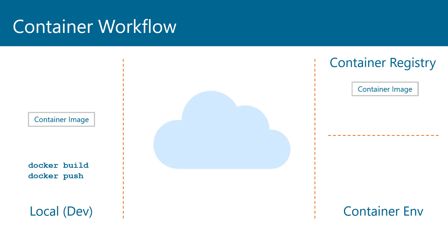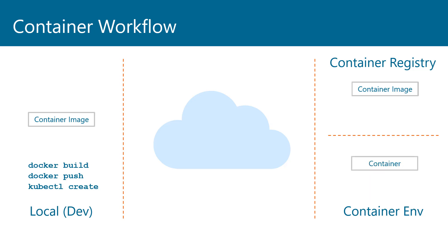Once the image is up on the container registry, you're ready to deploy it to an environment. If running on Kubernetes, you'd use a Kubernetes command. If using Docker directly, you'd use a Docker run command. If using App Services, you can use a command or the Azure portal to deploy it. In any case, the image is pulled from the registry into the container environment and converted into a running container.